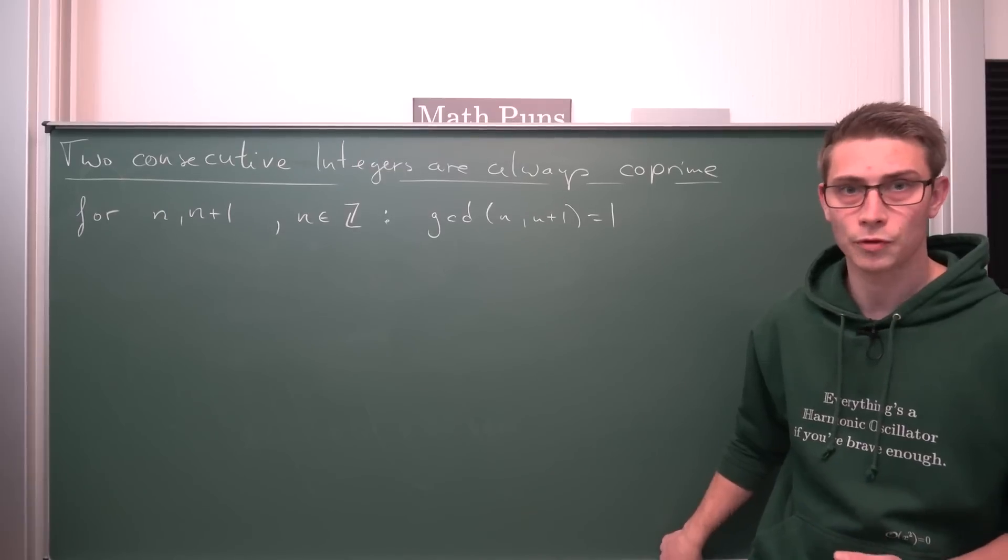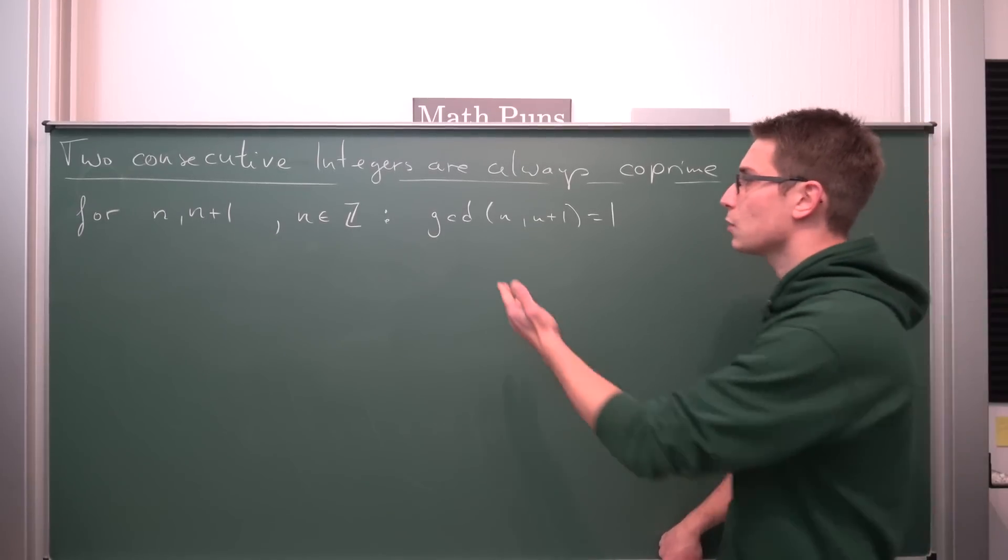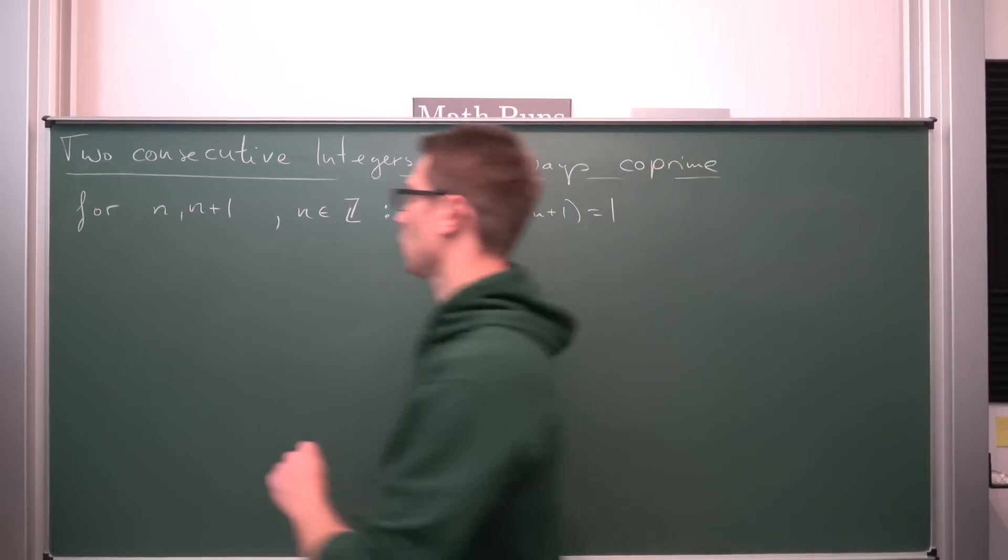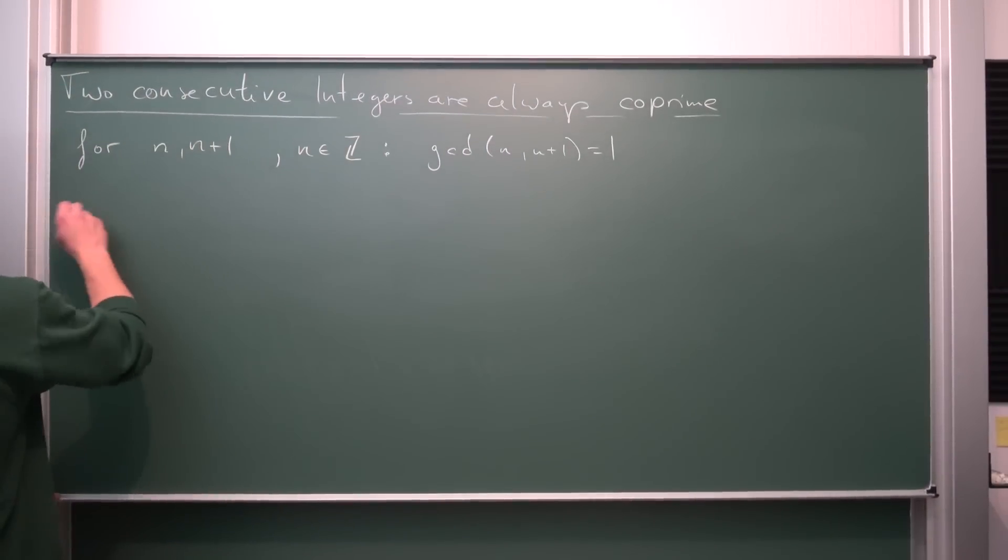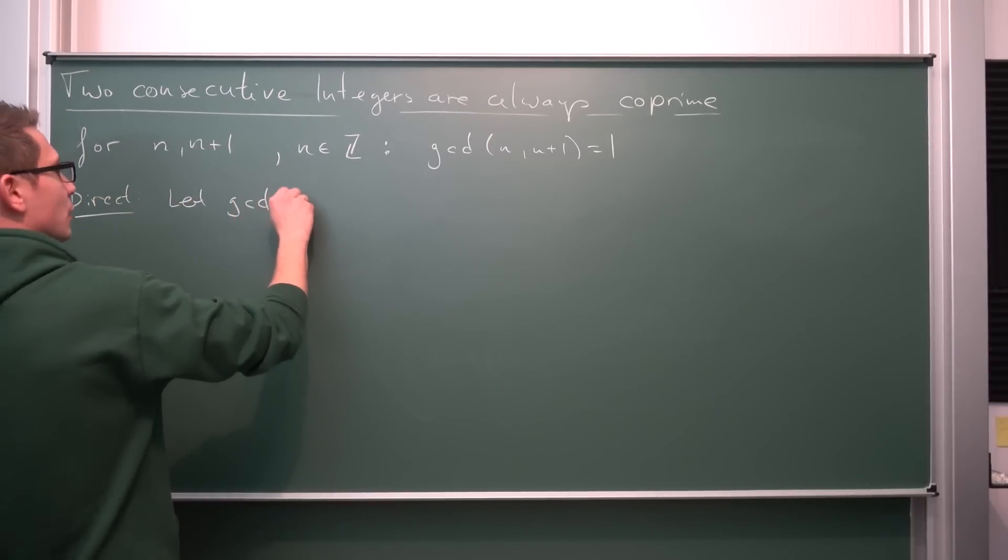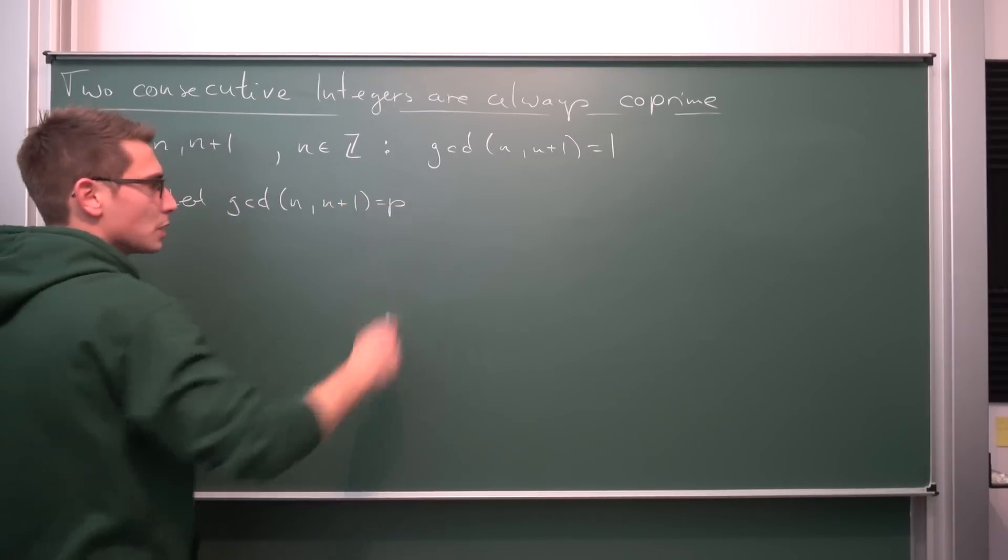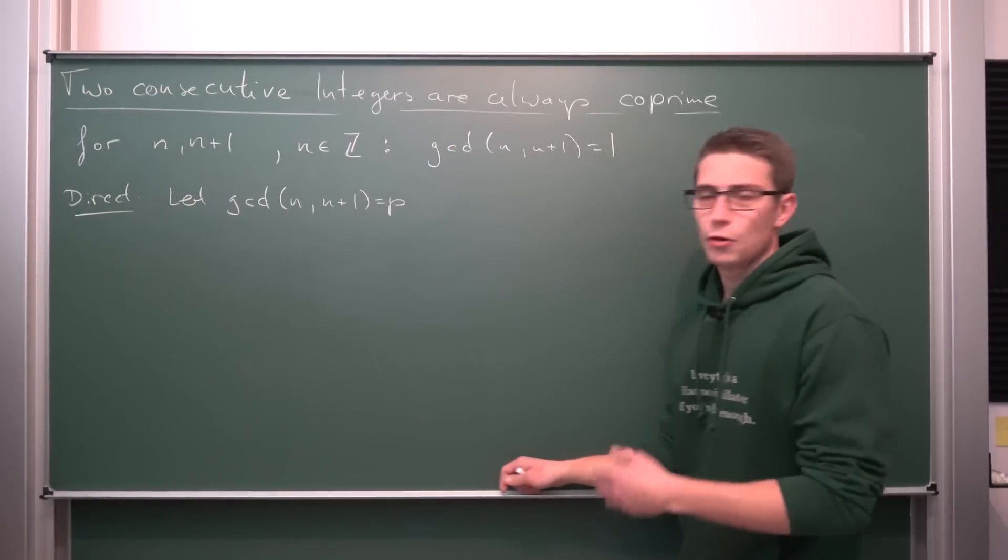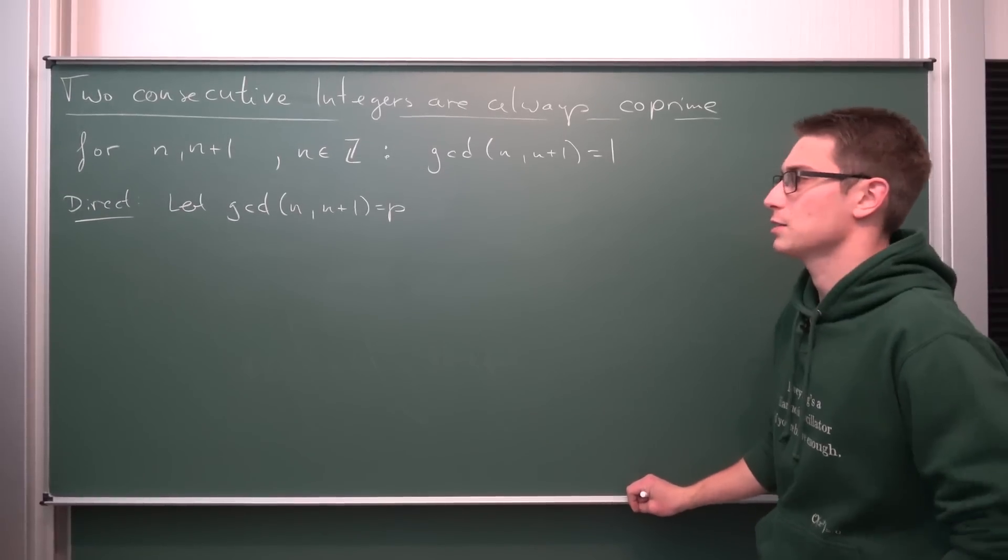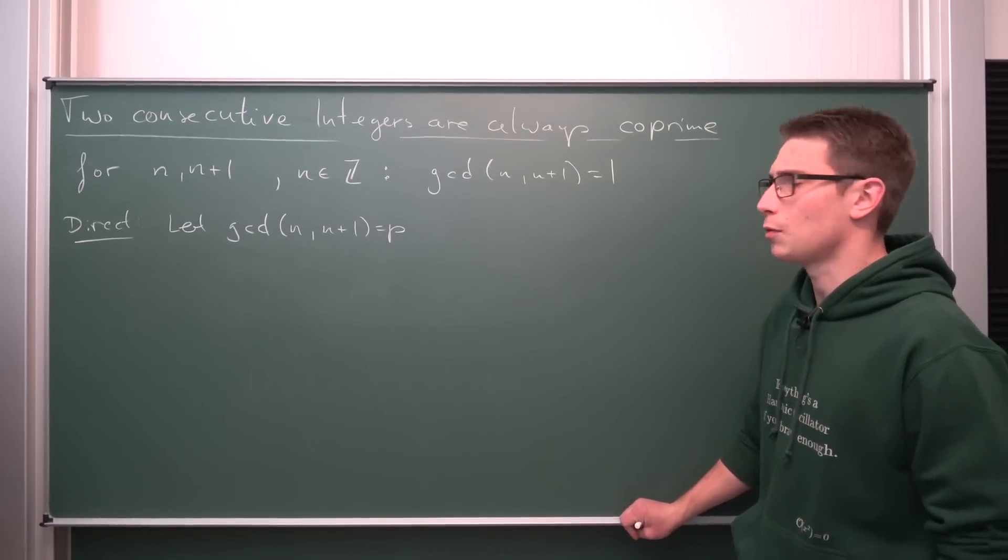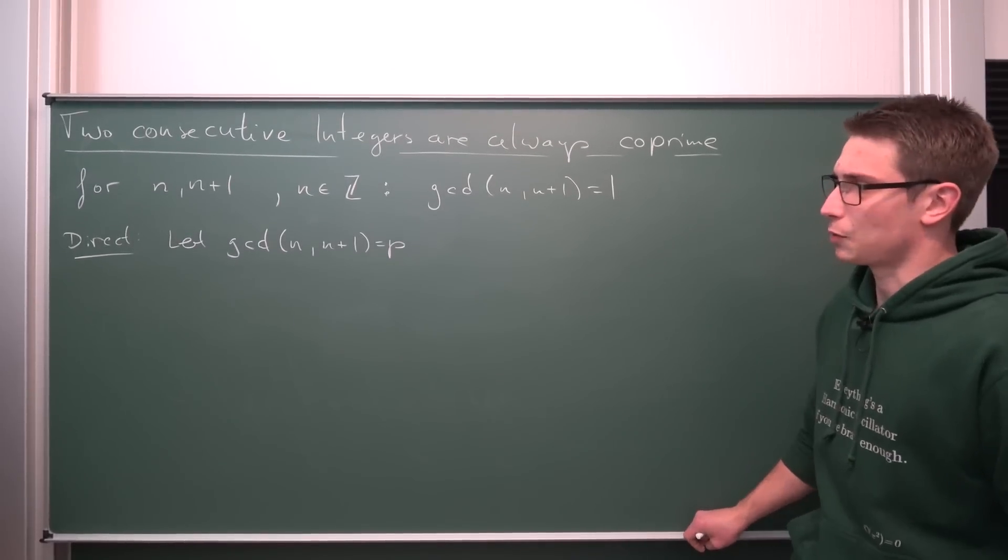This is going to be a direct proof. So for the direct proof, what we are going to say is we are going to let our GCD be equal to some random arbitrary number p out of the positive integers, for example. So, for the direct proof, let GCD of n and n plus 1 be equal to p. Where p, obviously, the GCD is defined like this, is element of the natural numbers or positive and negative integers. Now, next thing we are going to do, p should be from the natural numbers, but never mind. This really doesn't change anything on the problem.